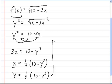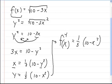And now, all you need to do is just change the y to f(x). And that's your inverse function. Let me write negative 1 up here. And then that's equal to one-third 10 minus x squared. And that's your answer. So the inverse function of f(x) is equal to one-third 10 minus x squared.